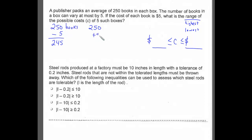In the second box, there might be 5 extra books, which would be 255 books. So my range of books can be anywhere in a box from 245 to 255.